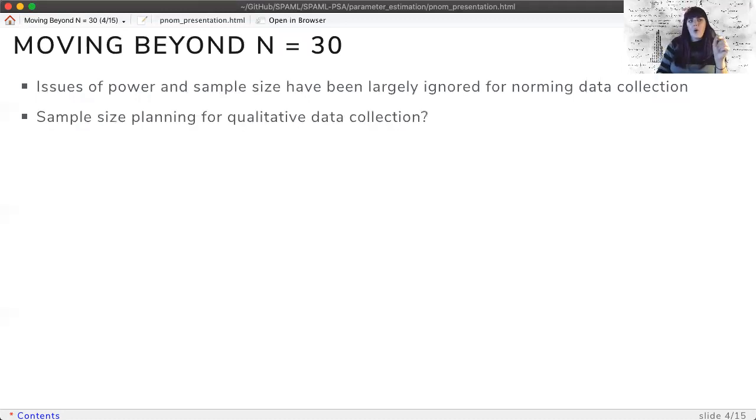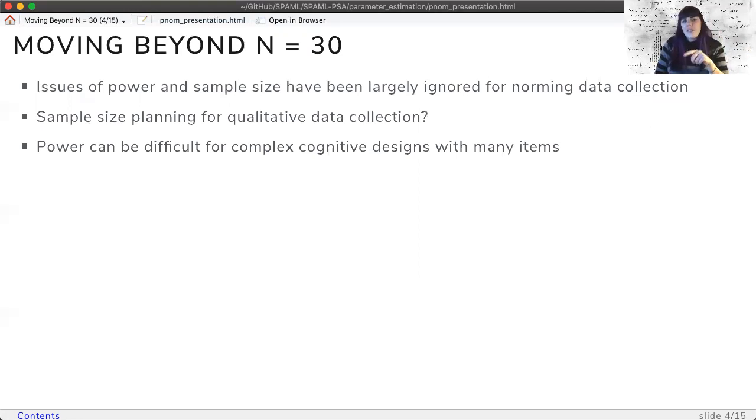Here, I'll discuss how one might plan sample sizes for qualitative data collection, such as the semantic feature property task, and quantitative data collection. Further, power increases in complexity for cognitive designs with many items and the use of multilevel models, and the ideas in this presentation can be used even when you have a specific hypothesis test in mind.